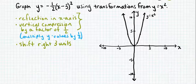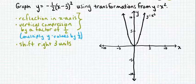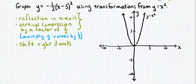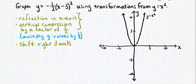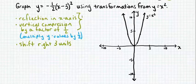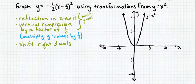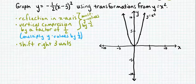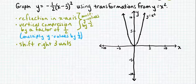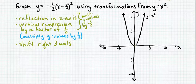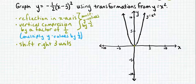We have three different transformations to apply. I'm going to graph the reflection and the compression together as an in-between step, then take that graph and shift everything to the right three units. A reflection in the x-axis means points above the x-axis move below it, the same distance from the x-axis — equivalently, multiplying y-coordinates by negative 1. Since I'm multiplying y-values by negative 1 for the reflection and by one-half for the compression, overall I want to multiply the y-values by negative one-half. Starting at the vertex (0, 0): multiplying 0 by negative one-half stays at 0, so that image point is unchanged.